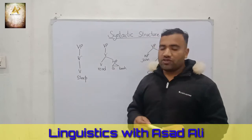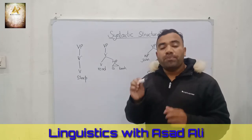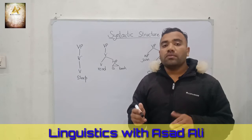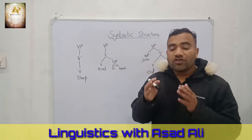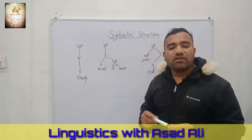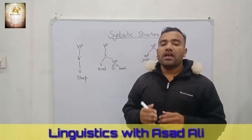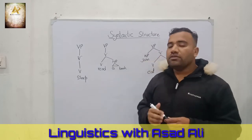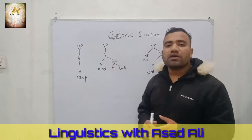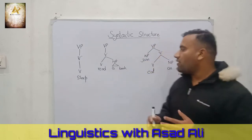The next projection is VP, and we have the phrase 'read a book.' In this phrase, the head word is 'read,' and 'read' basically regulates the whole phrase. 'Read' takes NP as a complement. As we have already discussed the structure of NP, the second level is V-bar and the third and final level is the maximum level VP. In this structure 'read' takes NP as a complement, and the whole phrase is regulated by the word 'read.'